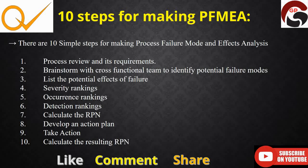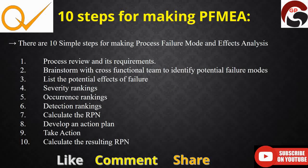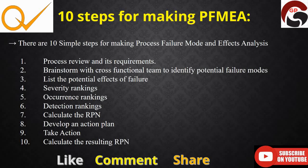There are 10 steps for making a process FMEA. The first is process review and its requirements. Using a process flowchart is a very good starting point. In the flowchart, you can identify what different components are used in the process, what the different process variables are, and it helps team members identify what the critical things are at each particular process stage.